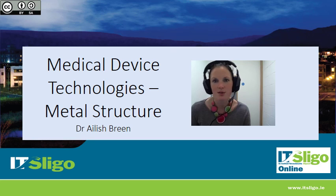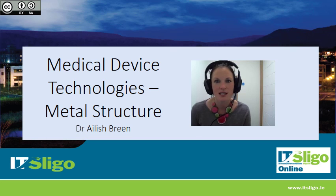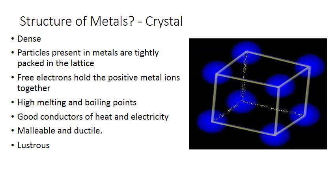We're going to talk about metals next in terms of their composition. What is a metal and why is this important for manufacturing? The structure of metals is a crystal structure.